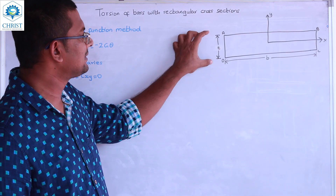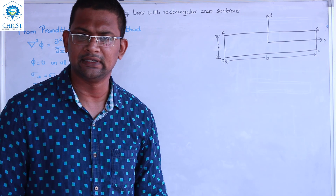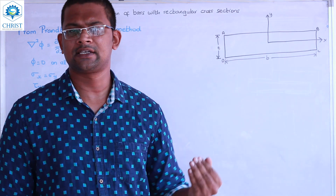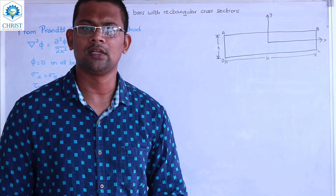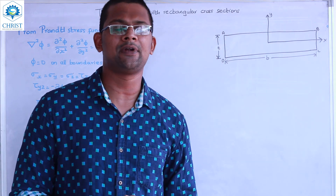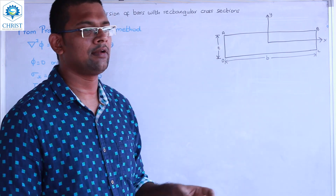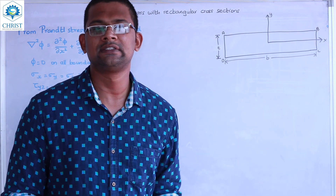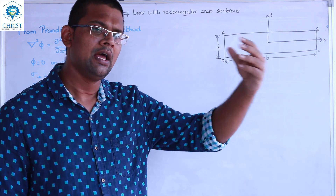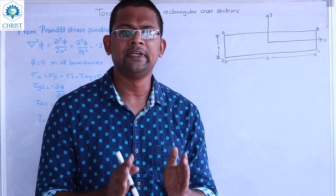Thin sections where the thickness is compared to its breadth. We will talk about the I section and the C section. We will learn the manufacturing process — rolling. We will shape the thin rectangular section, the I section, and the L section. We will talk about the formula. Then we will start with torsion of thin rectangular sections.